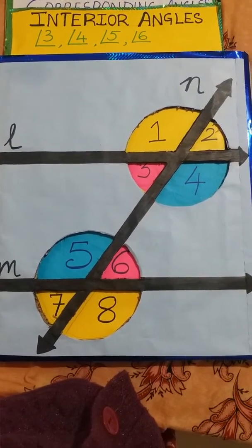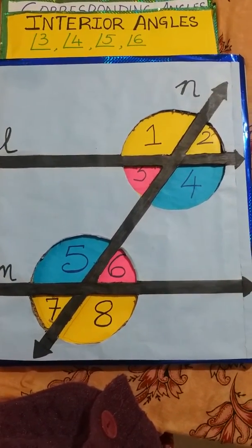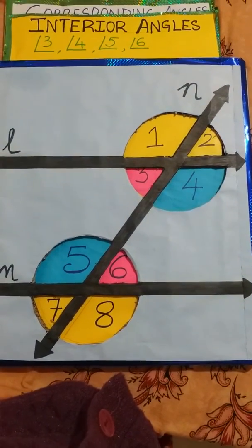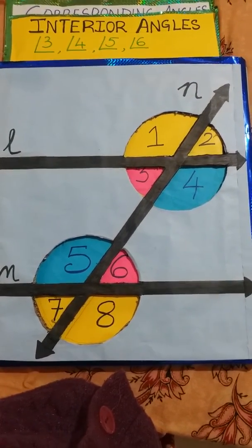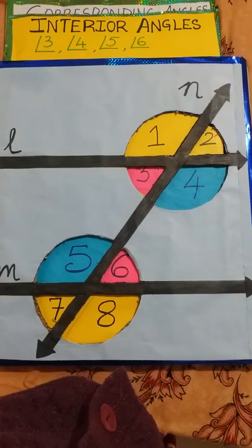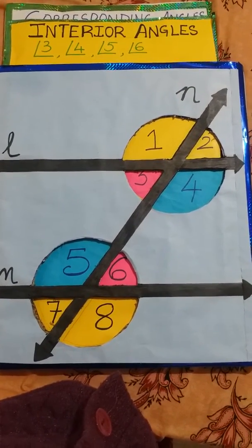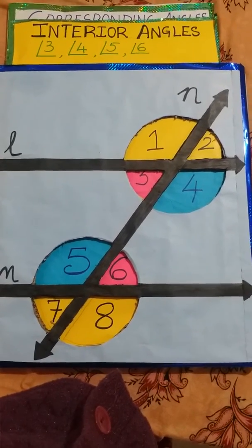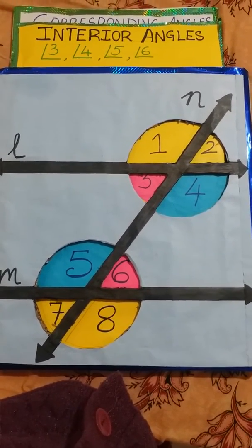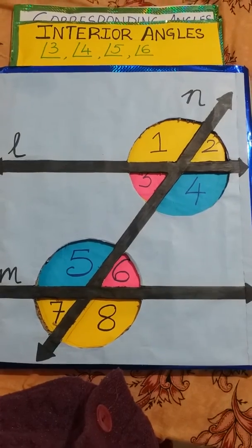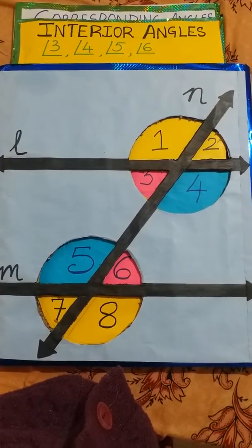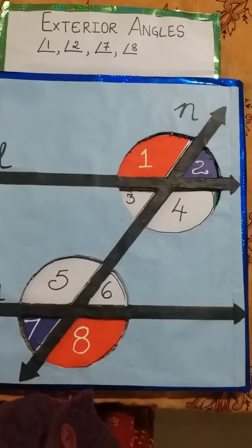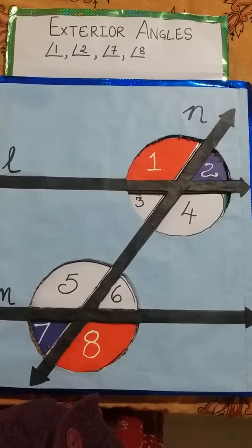Now we'll see interior angles. The interior angles are in the inside portion — I have colored angles 3, 4, 5, and 6. Those are the interior angles. The alternate interior angles are 3 and 6, and 4 and 5 — indicated by the same color. The interior portion means between lines l and m: angles 3, 4, 5, and 6.